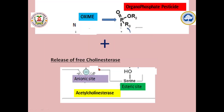As a result, the organophosphate pesticide and oxime complex are segregated and released, and the cholinesterase is freed from the complex. Acetylcholinesterase is now in a free form and is available to inactivate acetylcholine.